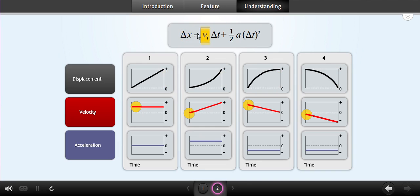Delta X is the displacement, that is, the difference between the ending and starting positions. V initial is the initial velocity of the object. Delta T is the change in time, that is, the final time minus the initial time.